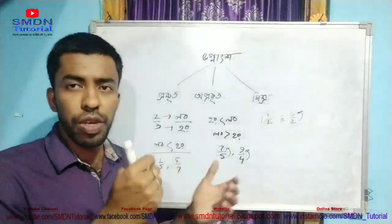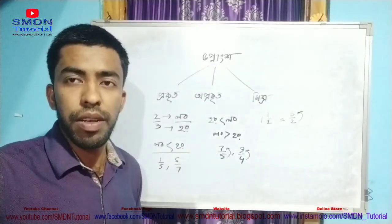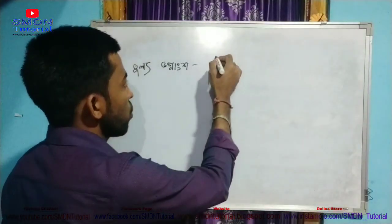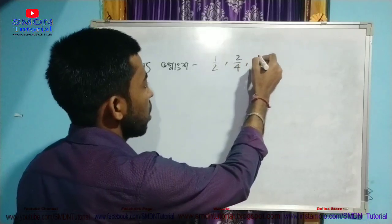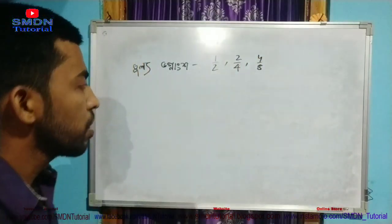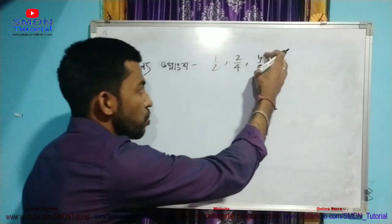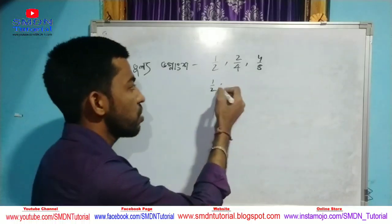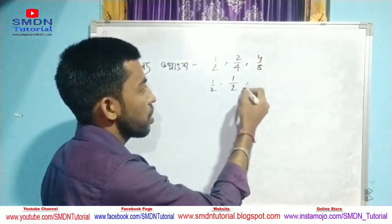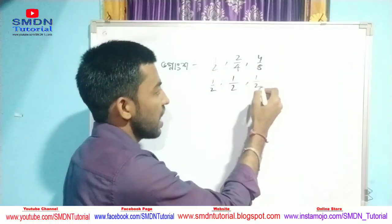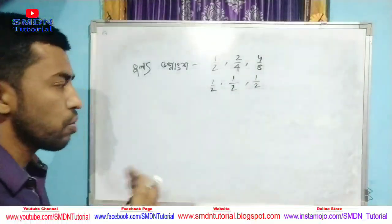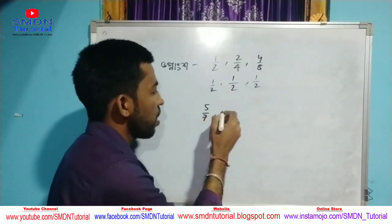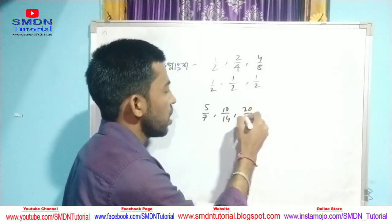The concept is clear. We don't have the same concept. The concept is 1 by 2, 2 by 4, and 4 by a. The concept is 1 by 2 and 1 by 2. The concept is 5 by 7, 10 by 14, 20 by 28.